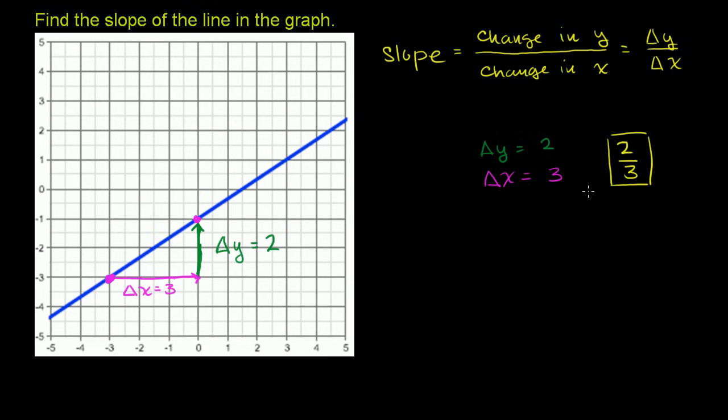And one thing I want to do, I want to show you that I could have really picked any two points here. Let's say I didn't pick those two points. Let me clear this out. Let's say I didn't pick those two points. Let me pick some other points. And I'll even go in a different direction. And I want to show you that you're going to get the same answer. Let's say I view this as my starting point. And I want to go all the way over there. So let's think about the change in y first.